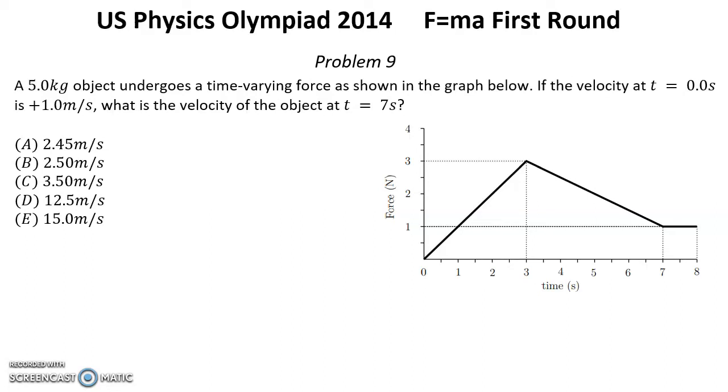Problem number 9. A 5 kg object undergoes a time-varying force as shown in the graph below. If the velocity at t equals 0 seconds is positive 1 meter per second, what is the velocity of the object at time t equals 7 seconds?